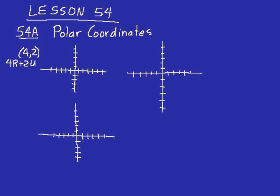Let's go ahead and plot that point on the graph to the right. 4R plus 2U would go to the right 4 and up 2, and so that would be the location of that point. We have those two ways of identifying that point: 4, 2, or the same thing in rectangular coordinates as 4R plus 2U. Now, we can also use something called polar coordinates. That point could be located relative to the origin by a distance — which would represent that red line there — and also by an angle relative to the positive x-axis. For that particular point, that angle is a 30-degree angle, and the distance from the point to the origin equals 2 times the square root of 3.